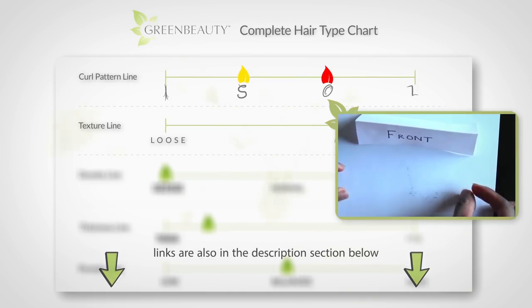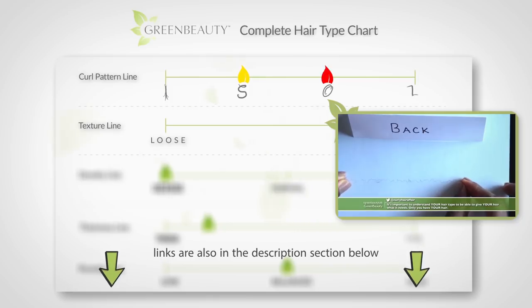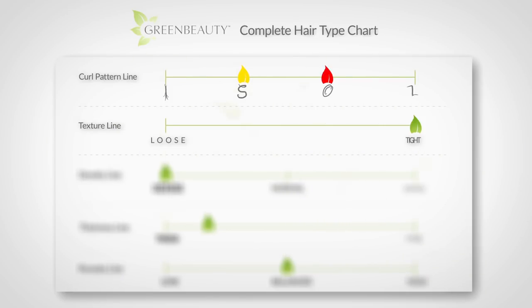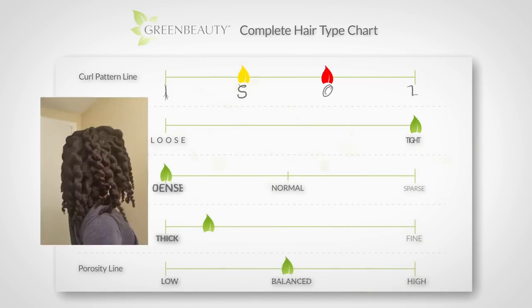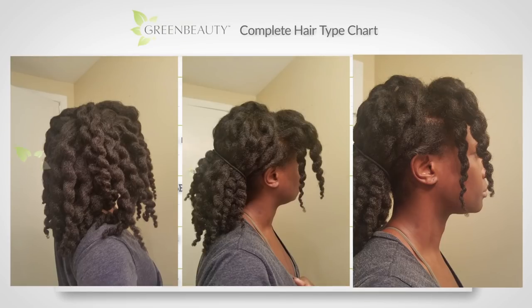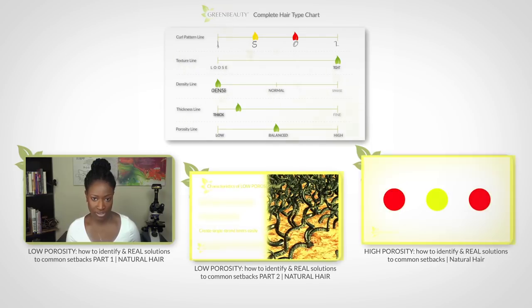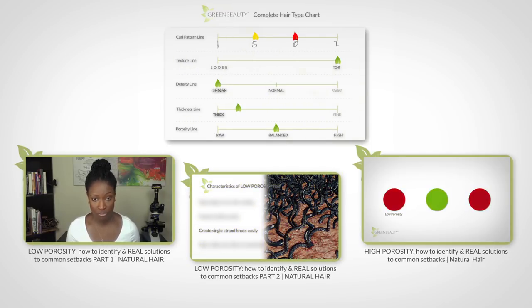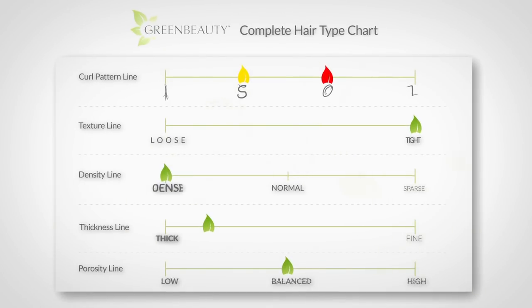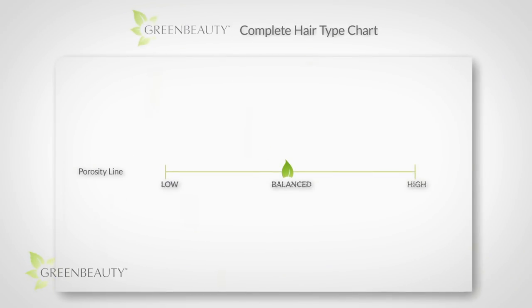So back in this video, I came up with the Green Beauty Complete Hair Typing Chart that puts into account the whole picture. Because there's way more that makes our hair special than just texture and curl pattern. The purpose of the last 3 videos, including this one, are designed to help you tell what porosity your hair is. Over time, I'll post more videos that go over the other 4 characteristics on the chart. But for now, let's focus on porosity because it's the most important one.